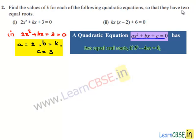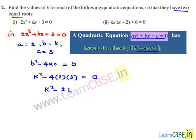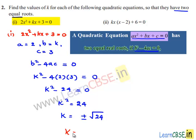Since the given equation must have two equal roots, the discriminant must equal 0: b² - 4ac = 0. So k² - 4 × 2 × 3 = 0, giving k² - 24 = 0, therefore k² = 24. Hence k = ±√24.